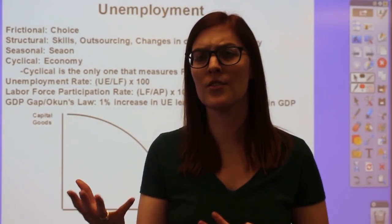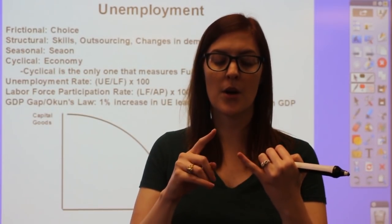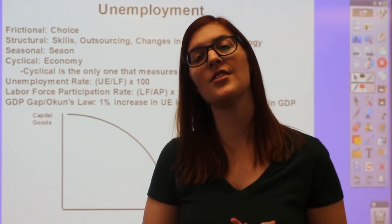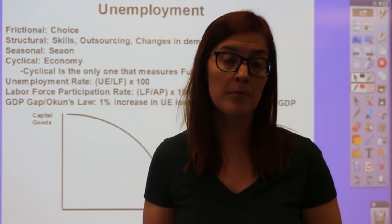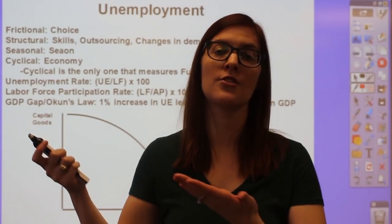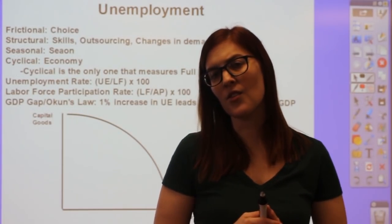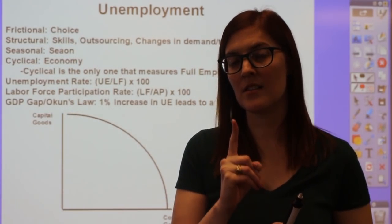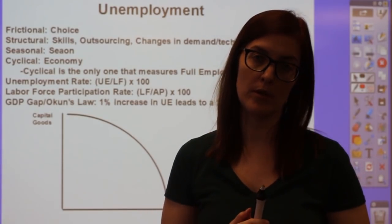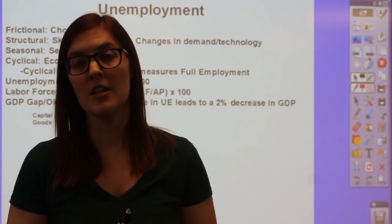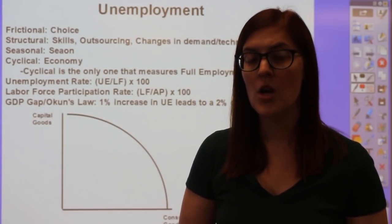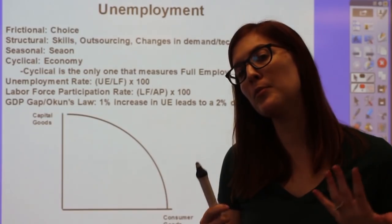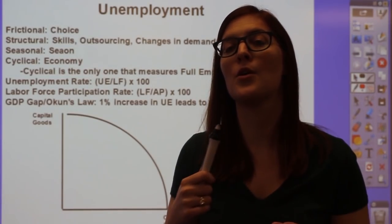Frictional, structural, and seasonal unemployment are all considered normal and healthy. The unhealthy type is cyclical unemployment, which goes up or down with GDP—in a recession, cyclical unemployment is high. Full employment means zero cyclical unemployment; we still have frictional, structural, and seasonal unemployment, which is why full employment is typically around 4%. The unemployment rate formula is: unemployed ÷ labor force × 100. The labor force participation rate is: labor force ÷ adult population × 100.